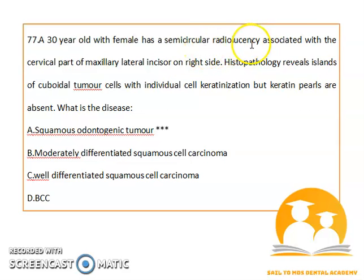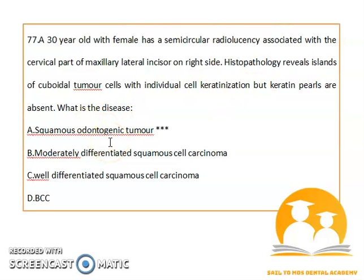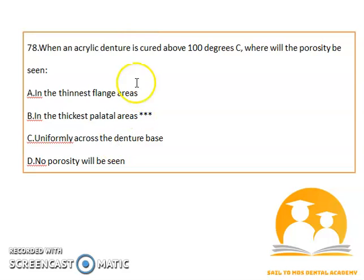A 30-year-old female has a semi-circular radiolucency associated with the cervical part of the maxillary lateral incisor on the right side. Key details: female, young age, involving anterior teeth. Histopathology reveals islands of epithelial tumor cells with individual cell keratinization but keratin pearls are absent. The diagnosis is squamous odontogenic tumor.